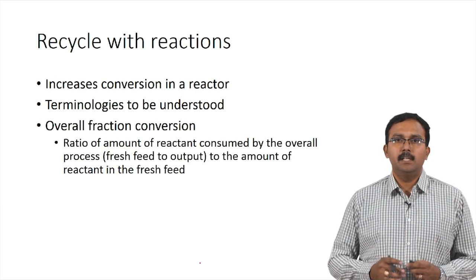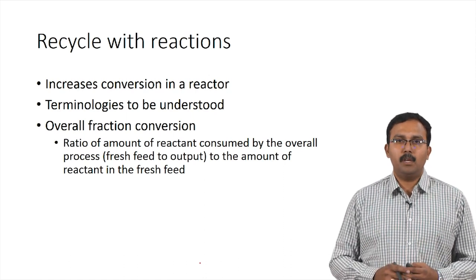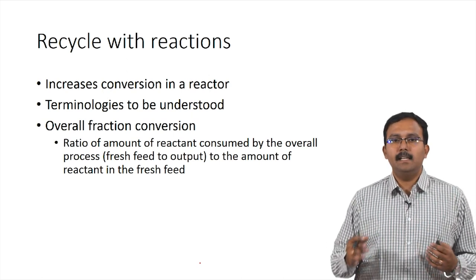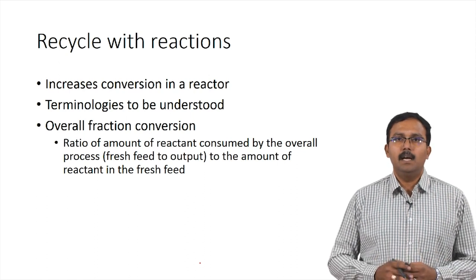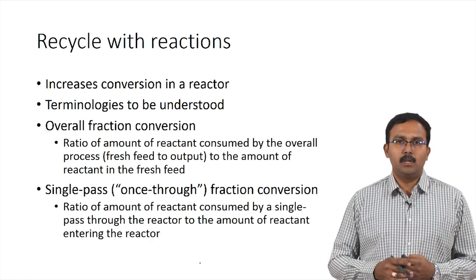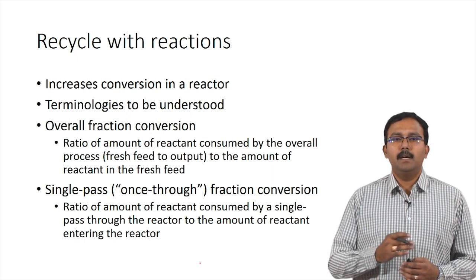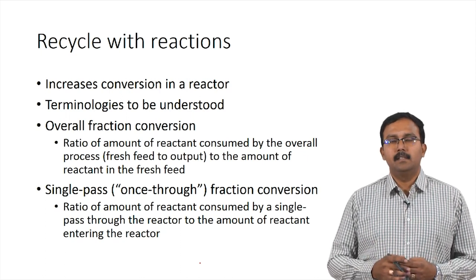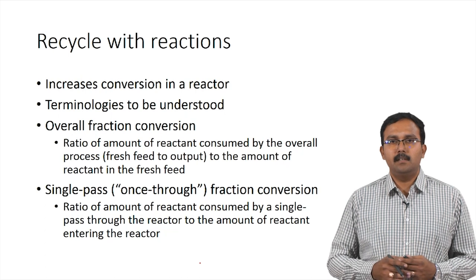Overall fraction conversion is the ratio of the amount of reactant consumed by the overall process — from fresh feed to output — to the amount of reactant in the fresh feed. So here you are considering the overall process as a single system and calculating the conversion. You can also be given something called a single pass or once-through conversion, which is the ratio of the amount of reactant consumed by a single pass through the reactor to the amount of reactant entering the reactor, taking the reactor alone as the system.